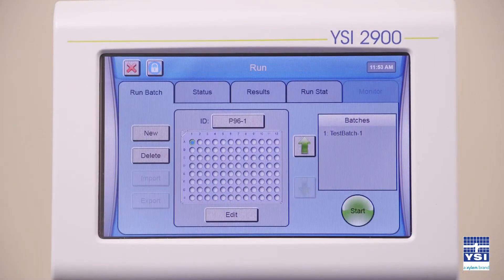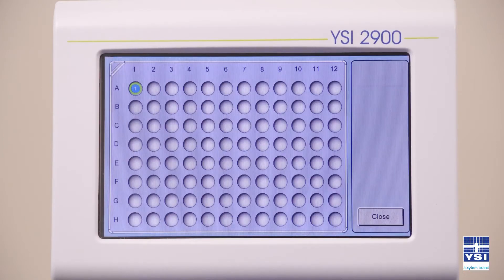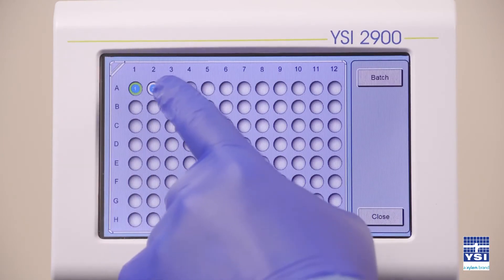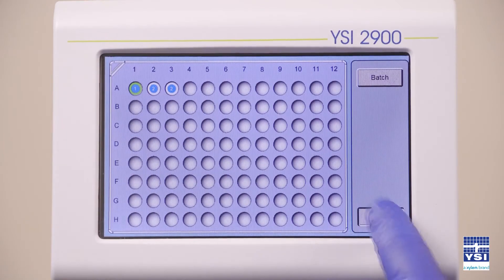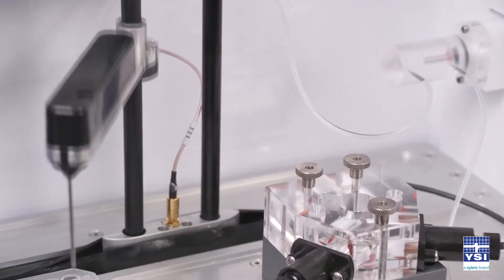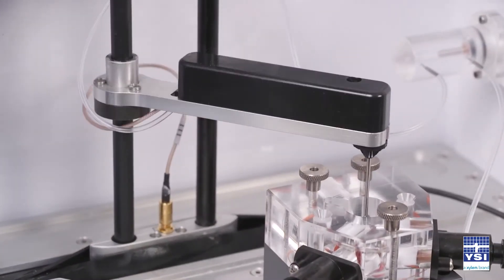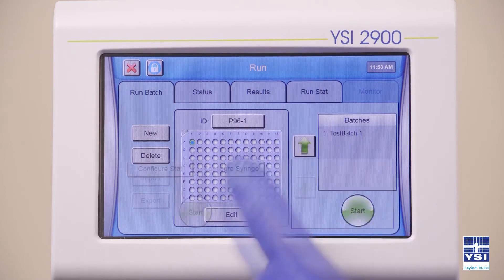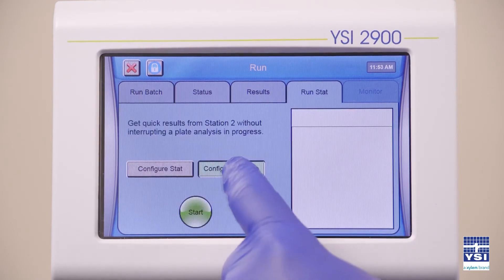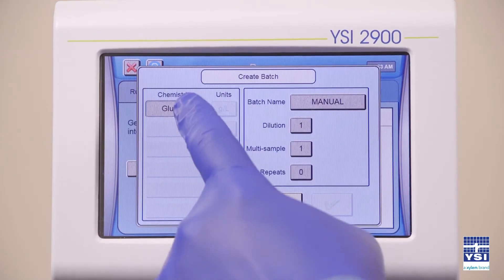The YSI 2900 Biochemistry Analyzer offers a 96-well sample tray, which accommodates samples ranging from 10 to 50 microliters, full sample automation, manual sampling with syringe configuration, programmable auto-calibration events, multiple handling options, and much more.